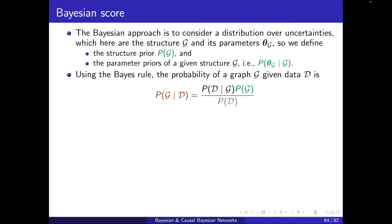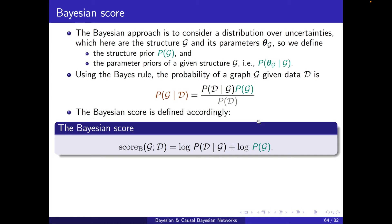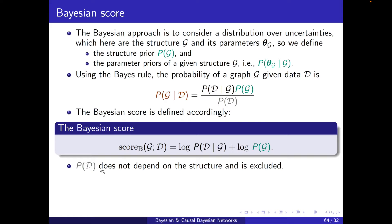This is quite similar to what we did in the parameter learning chapter. According to this, I can define my Bayesian score, which is the log of p of d conditioned on g plus log of p of g — taking the log and ignoring p of d, because this does not depend on the structure.